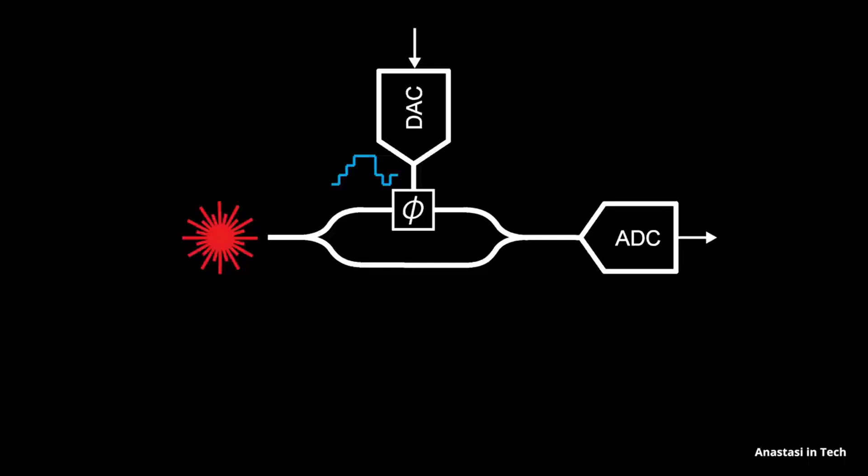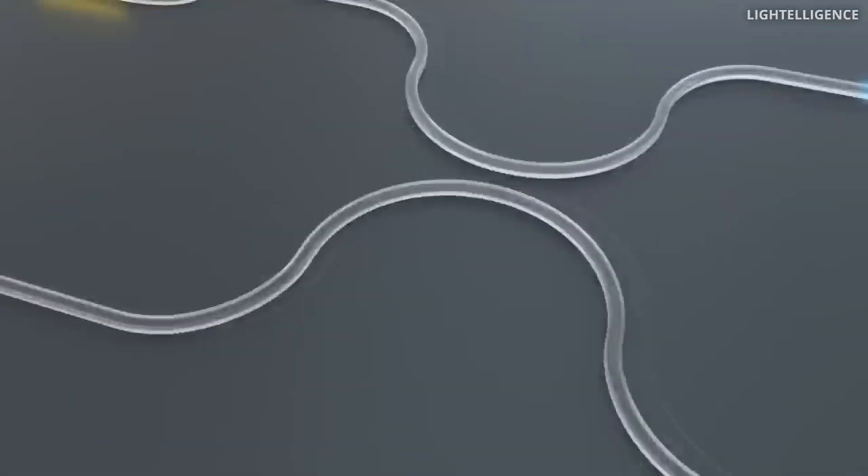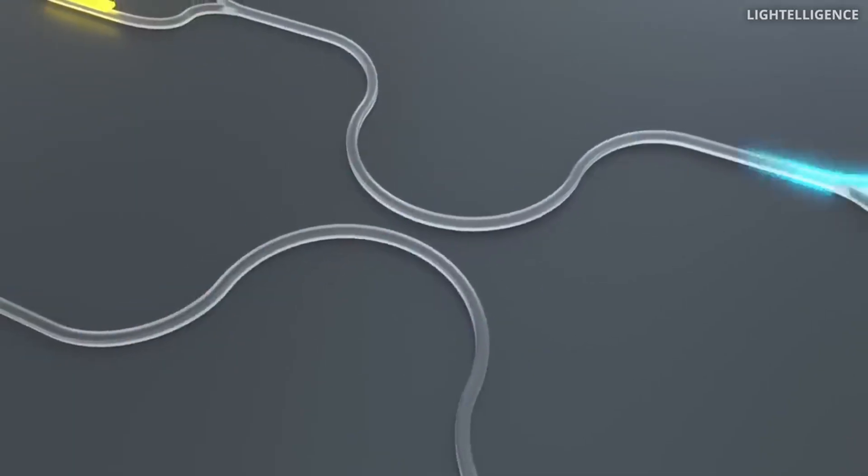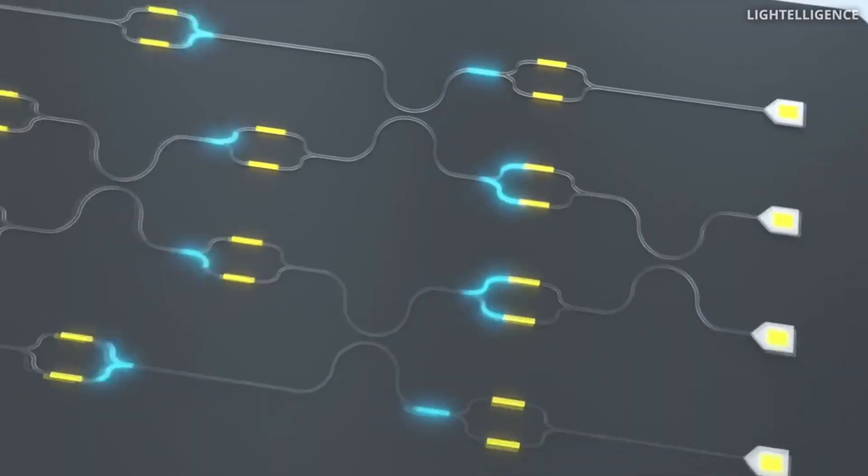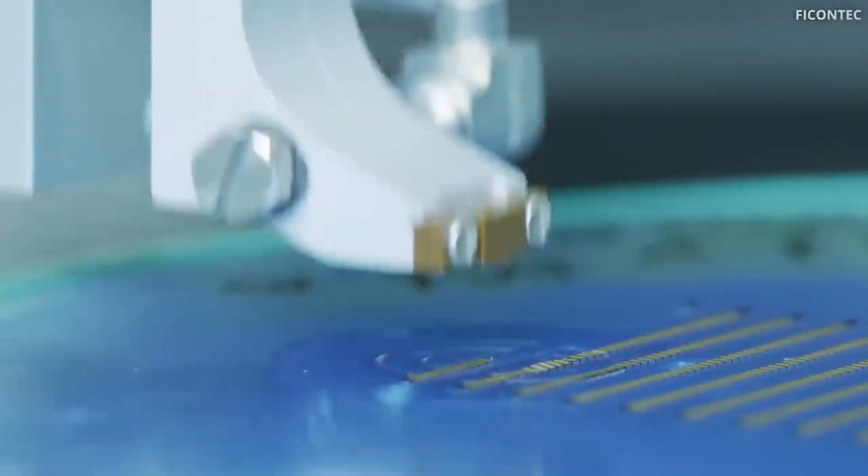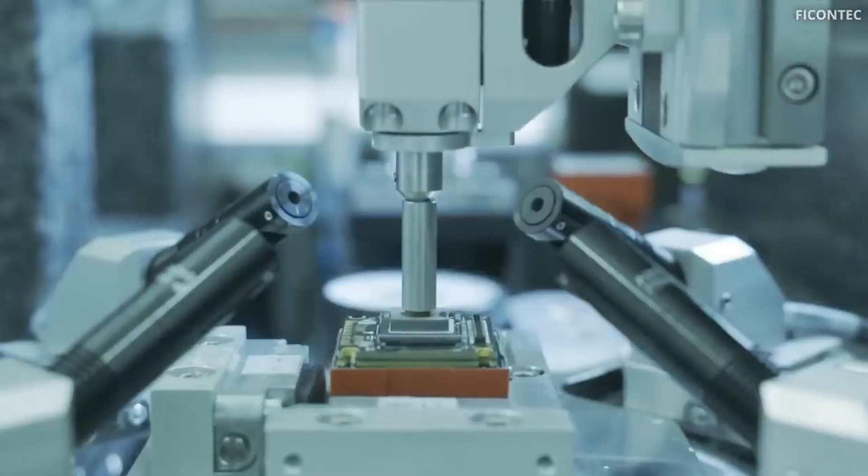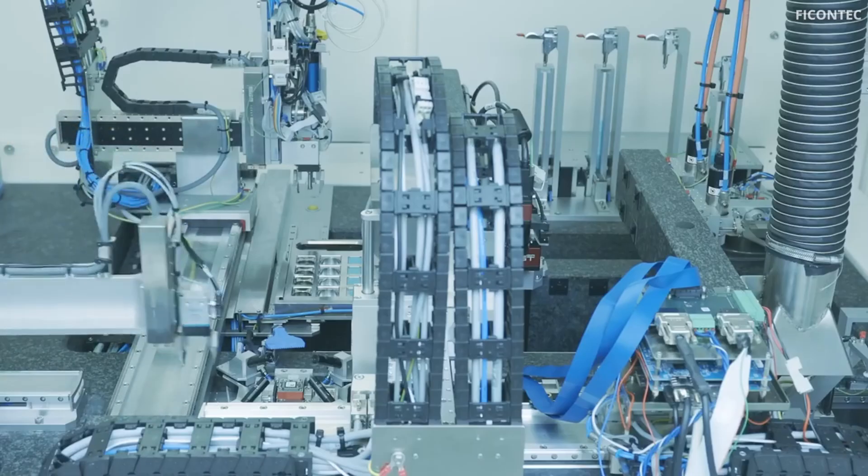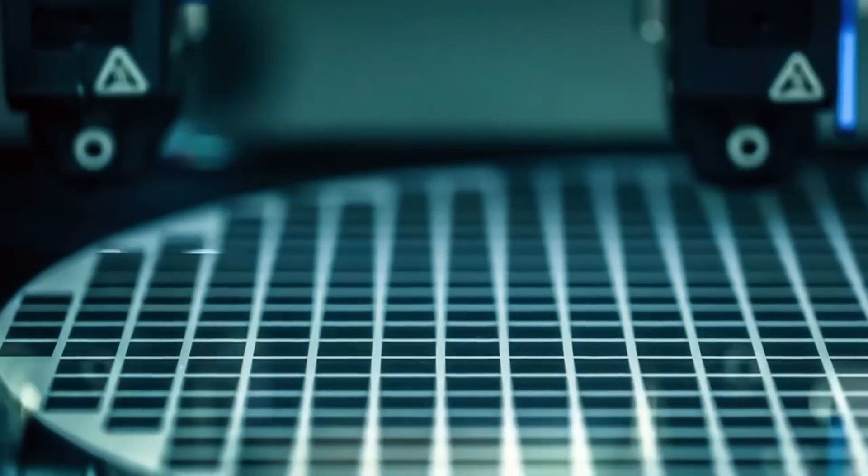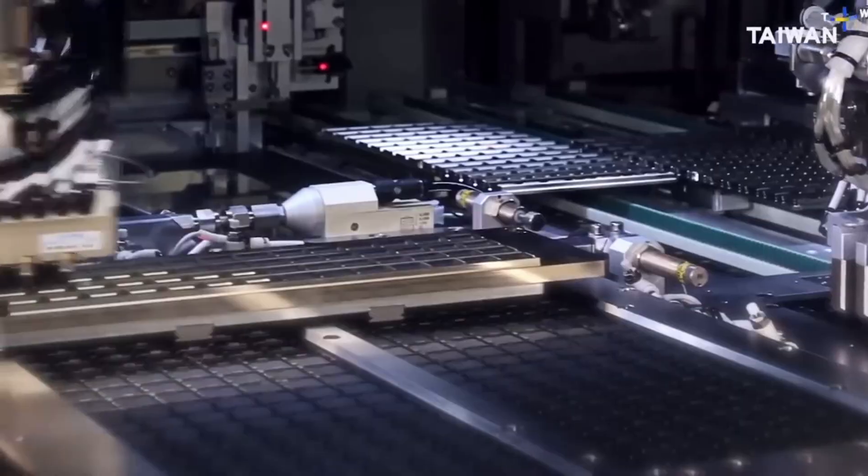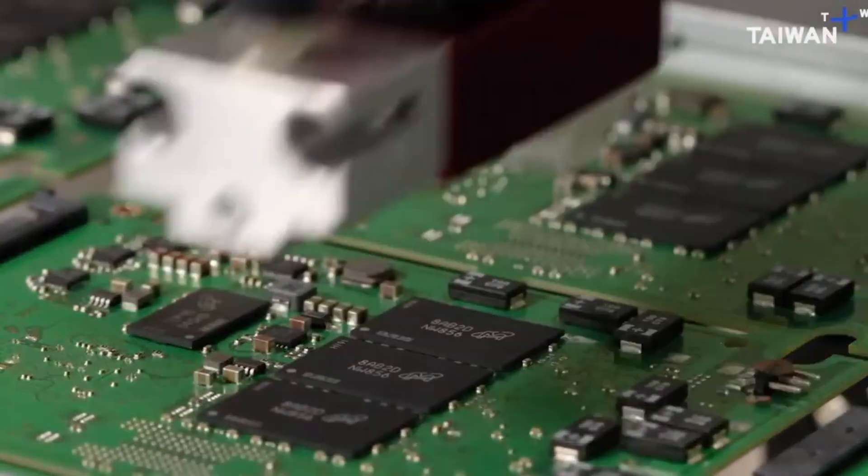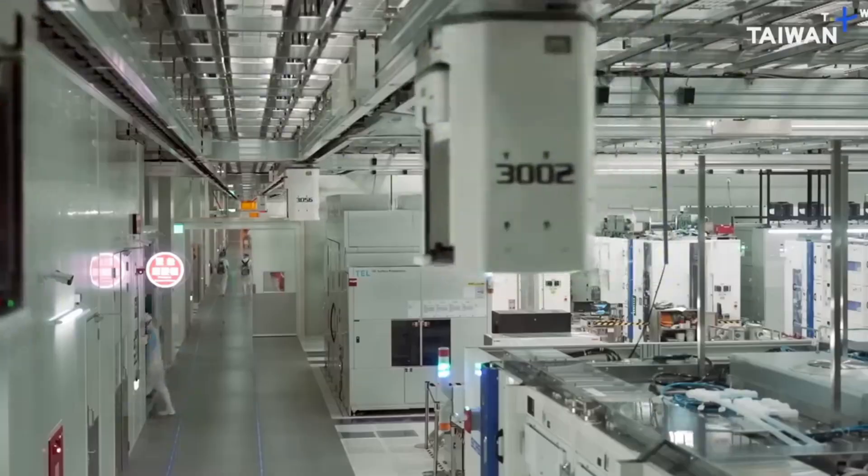But now, even FinFETs are reaching their limits. So once again, the industry is evolving. The next big thing is called gate all around, or GAA for short. Think of it as a new kind of transistor where the gate, the part that controls the switch, completely wraps around a flat, ribbon-like channel. Imagine stacking lasagna noodles and wrapping each one in foil. That's roughly what this looks like at the atomic level. This design offers even better control over current, allowing transistors to get even smaller without leaking or overheating. This breakthrough is already making its way into chips made by companies like AMD and Apple.